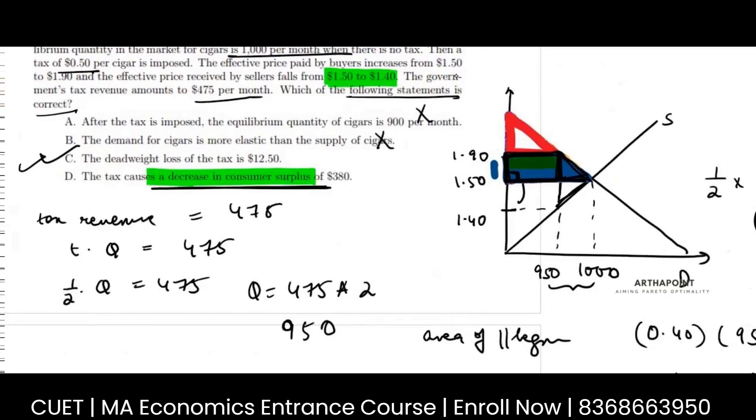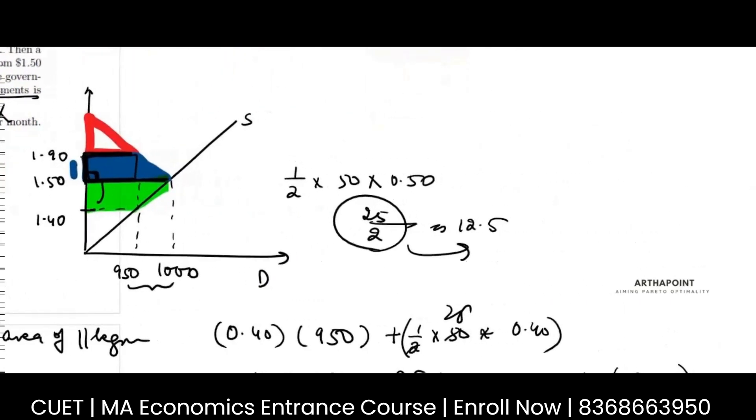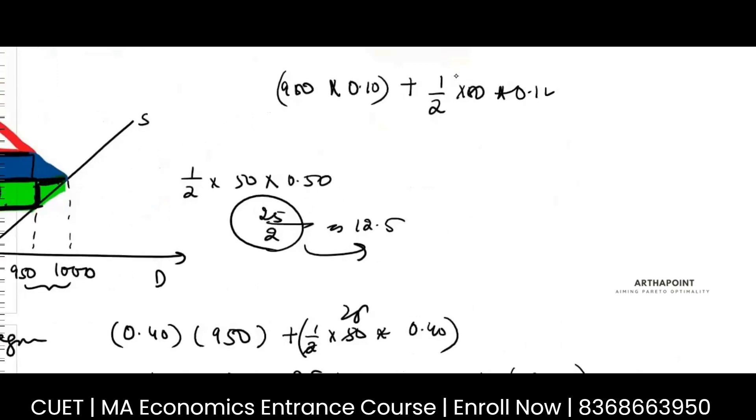Similarly, suppose the question would have asked you what is the decrease in the producer surplus, then it would have been this area. Again, if you have to find it out, it is area of triangle plus rectangles. So this is my rectangle being formulated - base is 950, height is 0.10. This is the area of the rectangle. And triangle will be half, base is 50 and height is 0.10. So this is your area of the producer surplus loss.